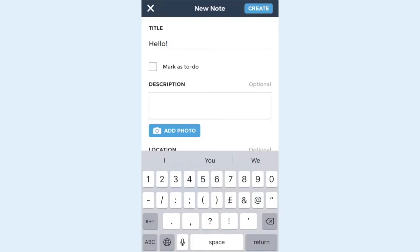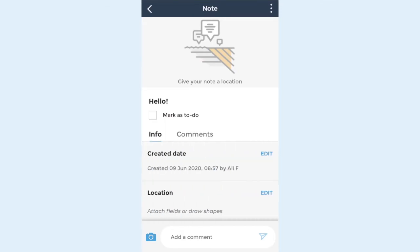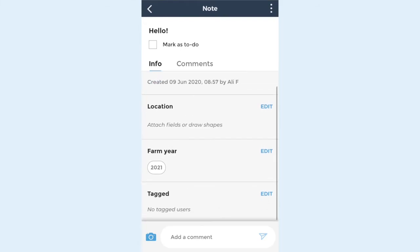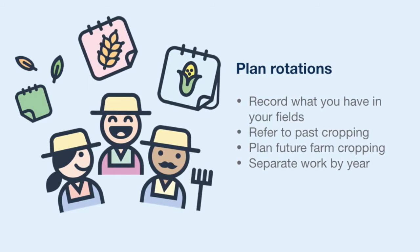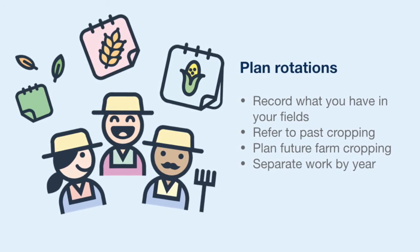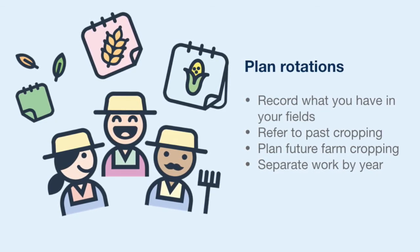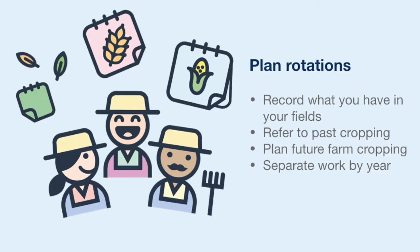Notes and jobs that you add while you're viewing the current year will automatically be attached to that year. So when you switch years using the menu at the top, you can see which activity has been set for each year. You can change year in the field and see what has been growing. You can also plan your next season's field uses while being able to view what was growing in the field previously.